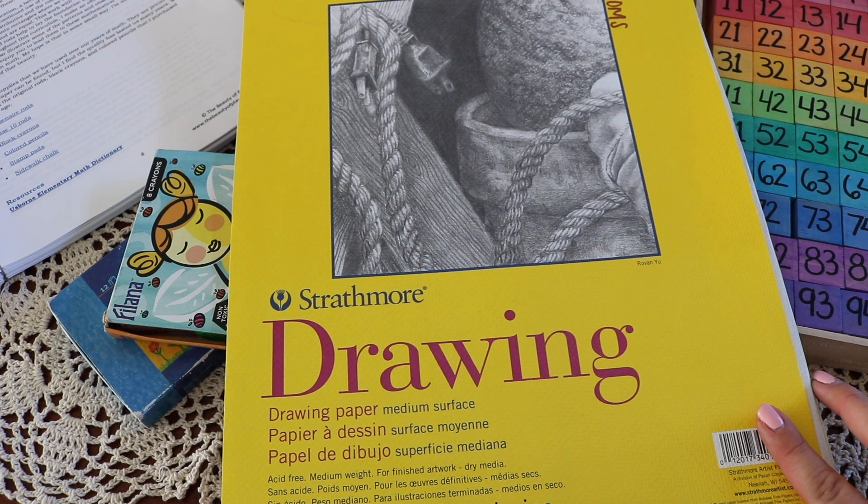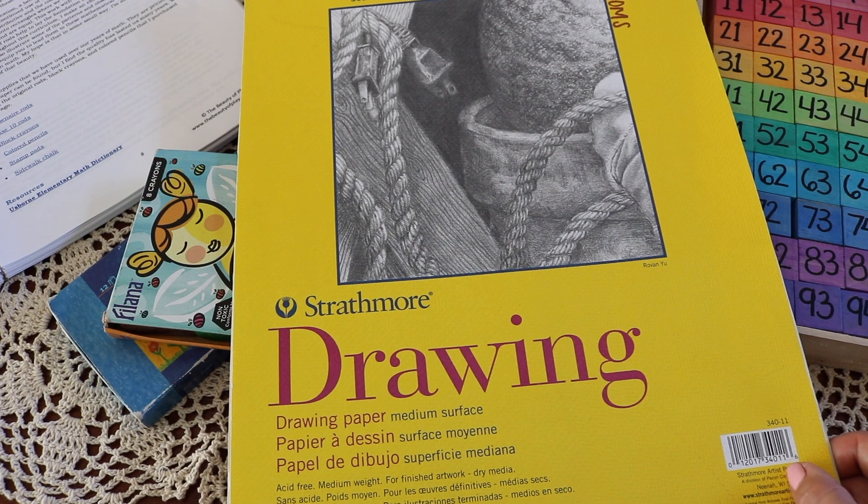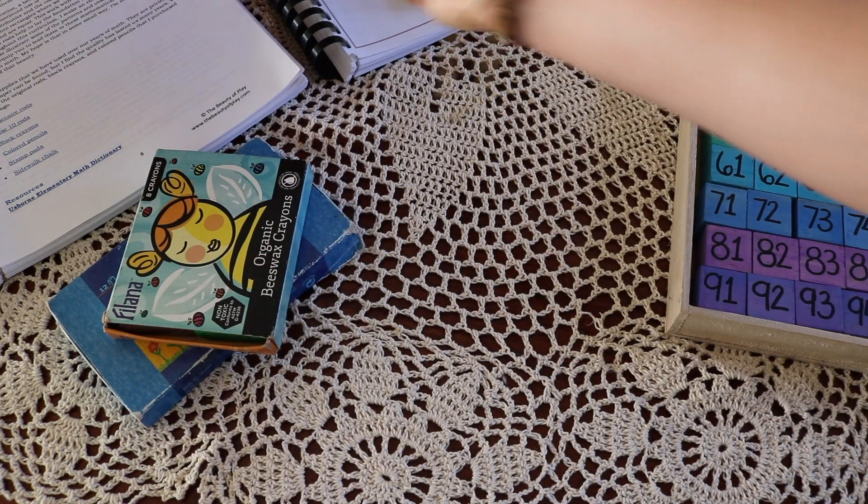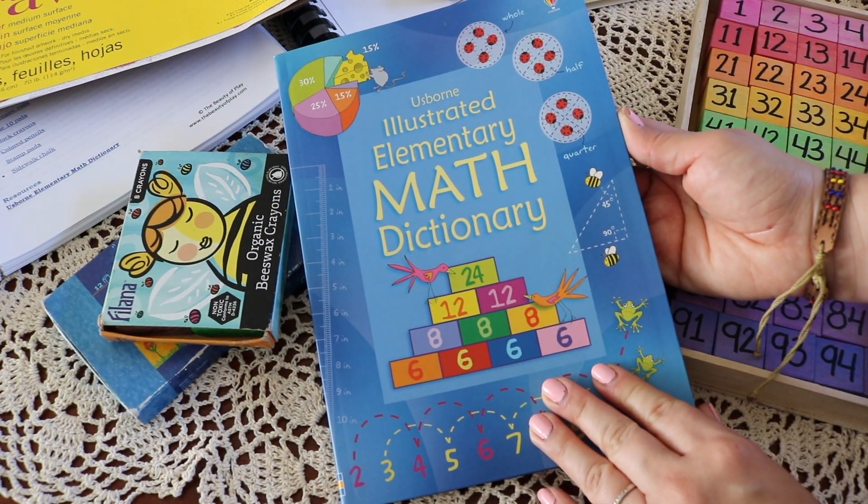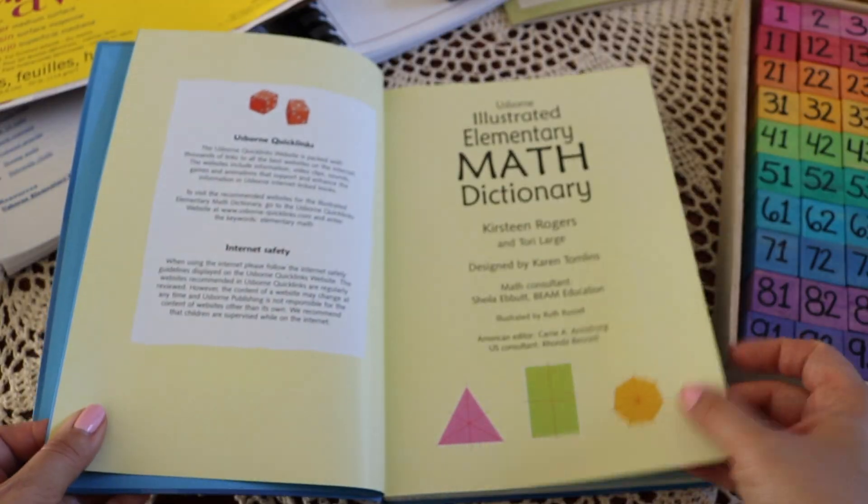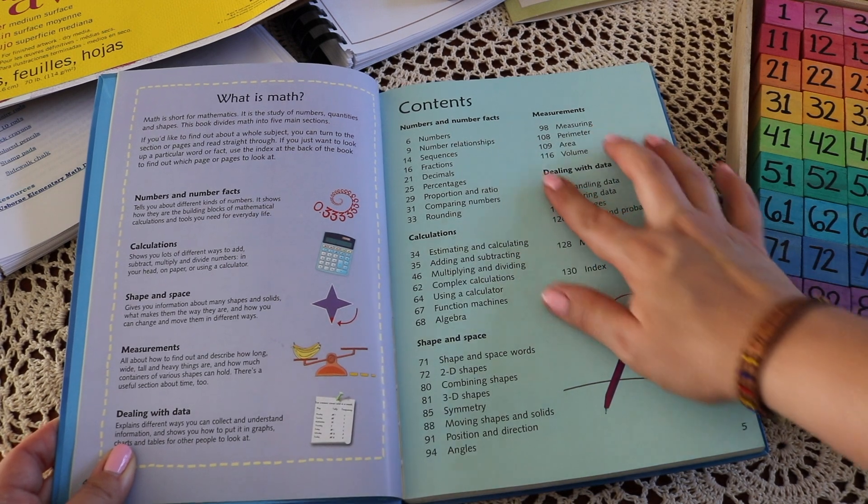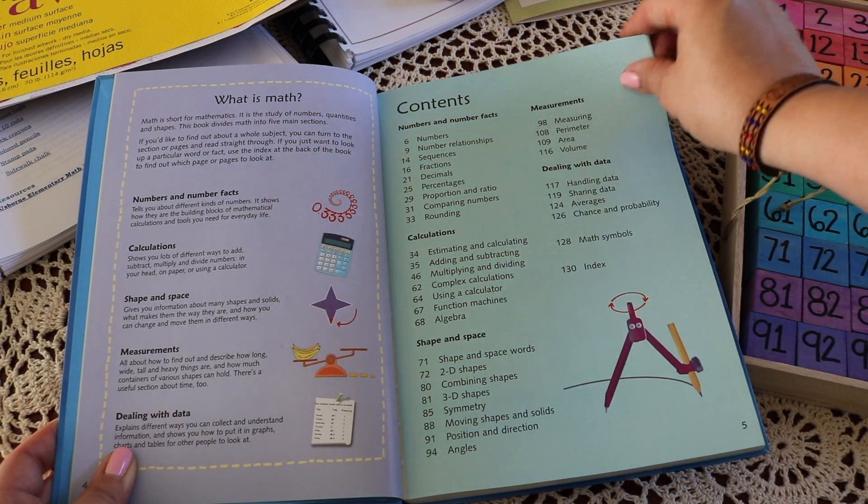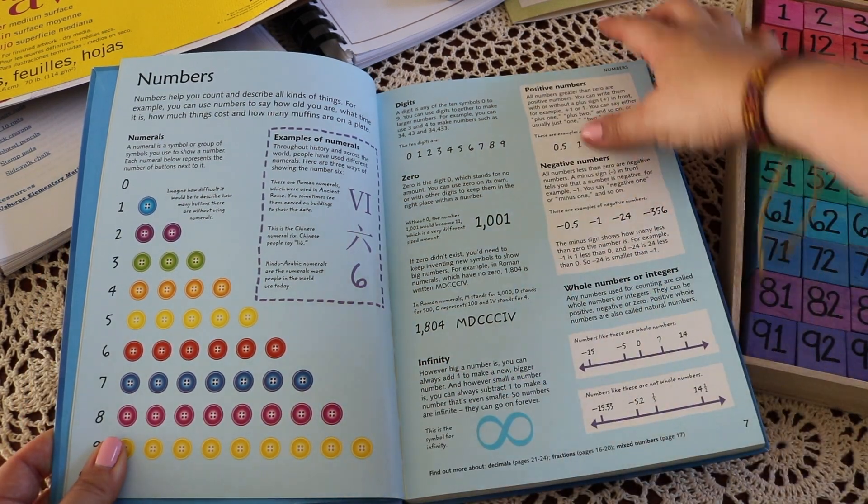A main lesson block book: I think Della recommends a large Strathmore spiral-bound drawing pad, and I agree. Some of you may know that we've been using large Strathmore pads for years. The large size is ideal for students who benefit from a larger canvas, and Strathmore has quality paper. As a supplemental resource, she also recommends the Usborne Elementary Math Dictionary. This is a great resource to reference for math ideas and concepts.